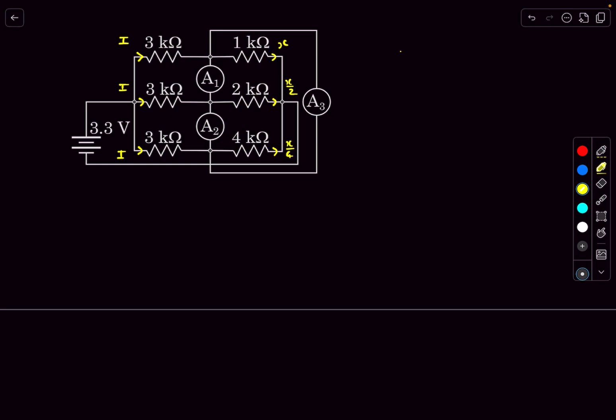Now the sum of x, x by two, and x by four should be equal to 3i, because the total current leaving from the battery is 3i. So the total current coming back to the battery must also be 3i. So now if we solve for x we get x as 12i divided by 7.